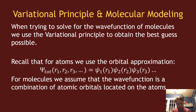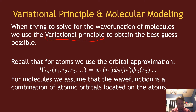When we're trying to solve for the wave function of a molecule, we use the fact that we satisfy this variation principle, so that we can get the best guess value possible by lowering the energy. The lower the energy, the closer I am to the true ground state.